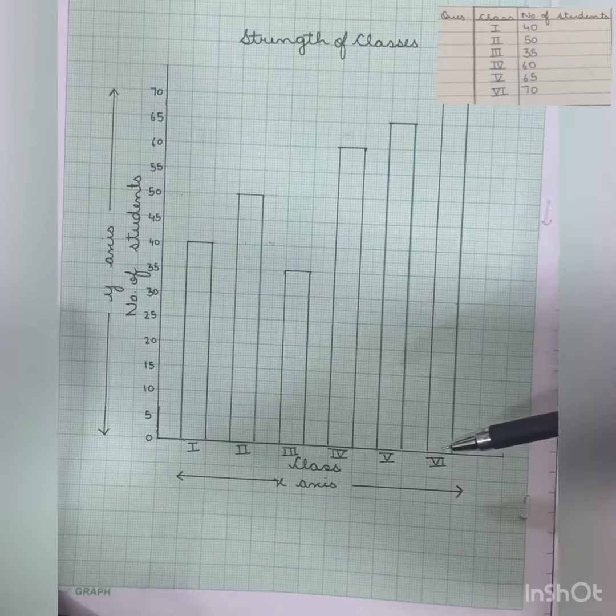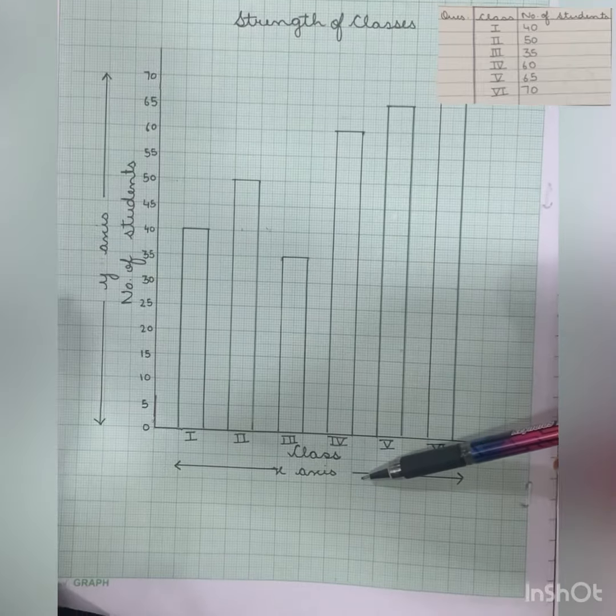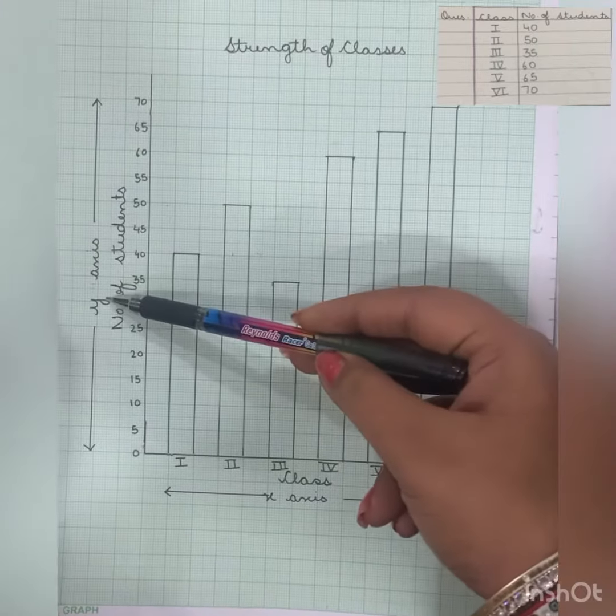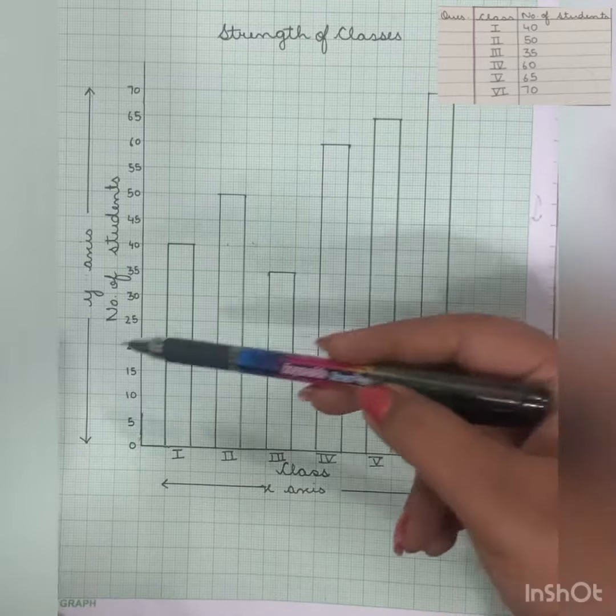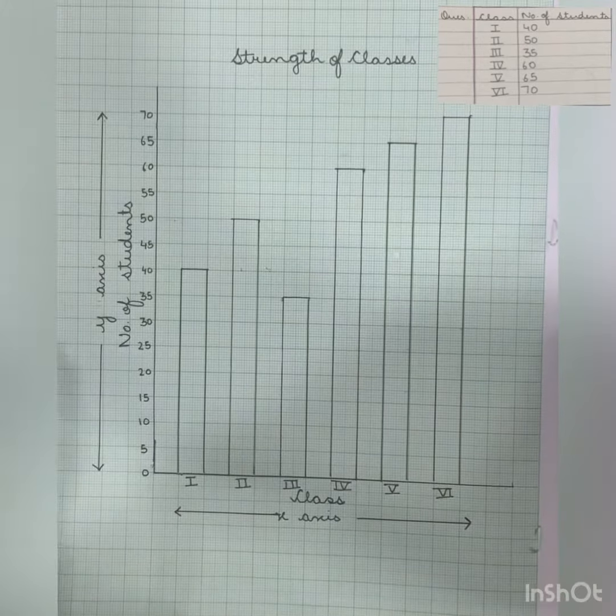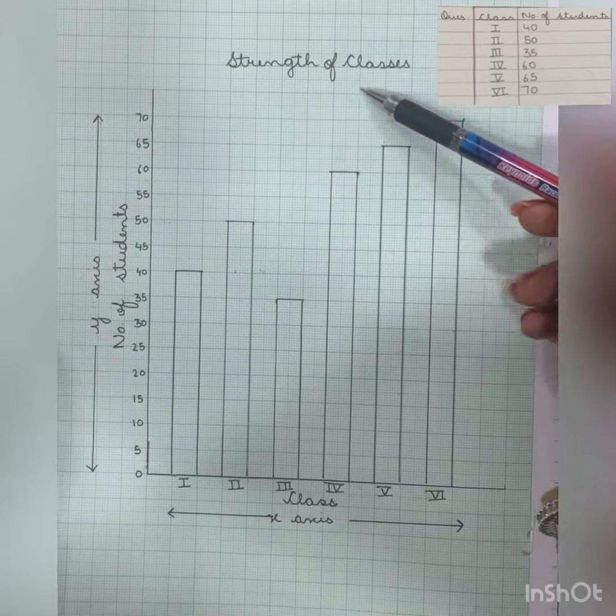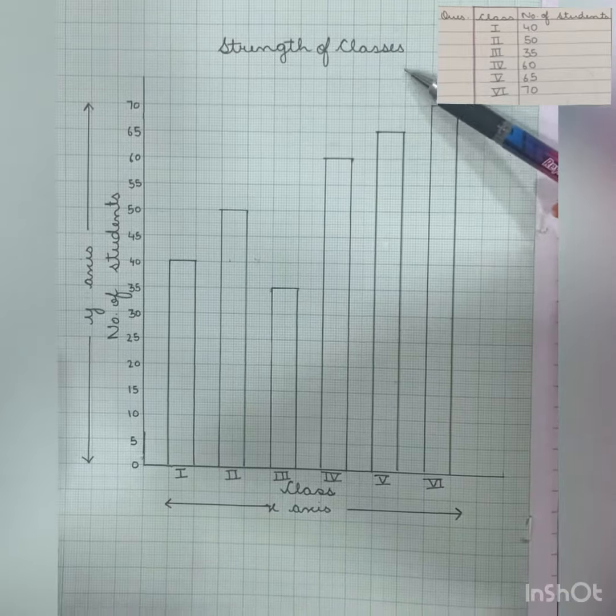This is a bar graph. It has two axes: one x-axis and y-axis. The x-axis is horizontal and the y-axis is vertical. This is the title of the bar graph: the strength of classes.